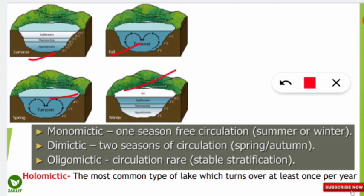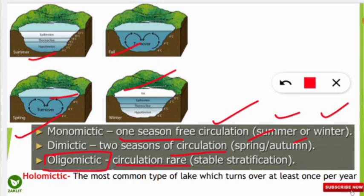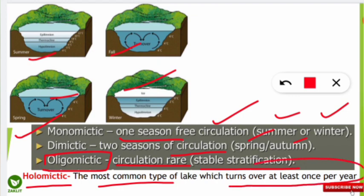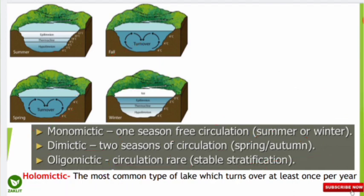Four important terms to remember: Monomyctic lakes have one season of free circulation, either in summer or winter — mono means single. Dimyctic lakes have two seasons of circulation, one in spring and one in autumn — di means two. Oligomyctic means circulation is rarely seen; these are called stably stratified lakes. Holomyctic are the most common type, turning over at least once per year, and can be more than once. If it turns over exactly once, it may also be monomyctic.